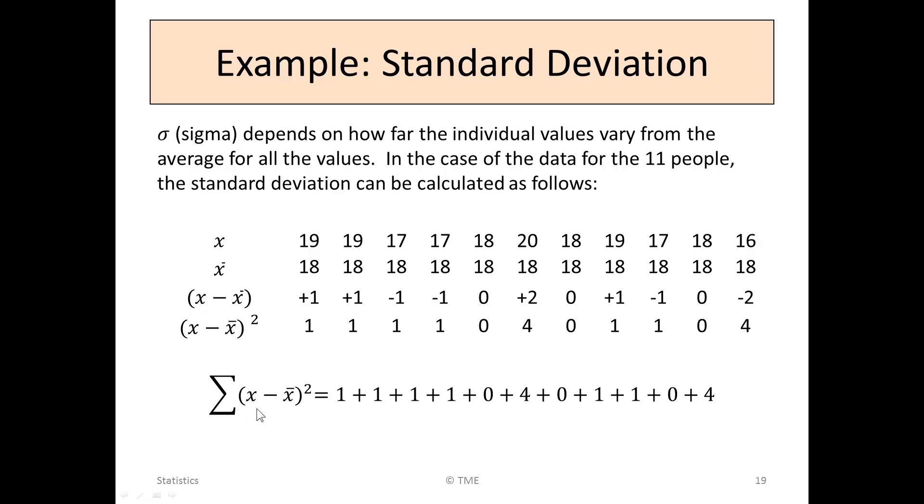So the sigma of all of this row, the last row here, is 1 plus 1 plus 1 plus 1, written here, plus all the numbers there. So that's our sum of the entire row of x minus x bar squared.